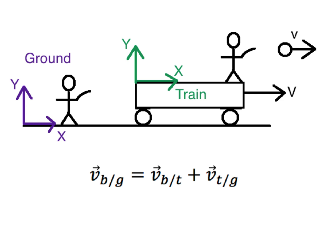There is a fundamental relationship between the velocity of the ball as measured from the green train coordinate system and the velocity of the ball as measured from the purple ground coordinate system. I've written down that mathematical relationship as an equation. Note that these v's stand for velocities and they are vectors — that doesn't matter much here since everything's in a straight line, but when things move at angles, the vector nature becomes important.